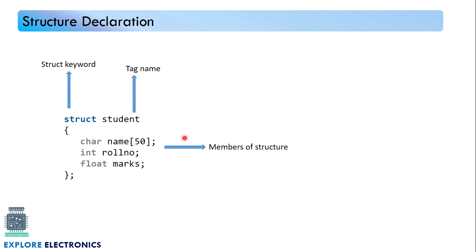Here is the declaration of a structure. We use the keyword struct to instruct the compiler that this is a structure. After the keyword comes the tag name, which is the structure name — we call it the tag name. Inside the curly braces we list the members of the structure, which are the data fields we want to store. In our example: name is of type character, role number is of type integer, and marks is of type float.